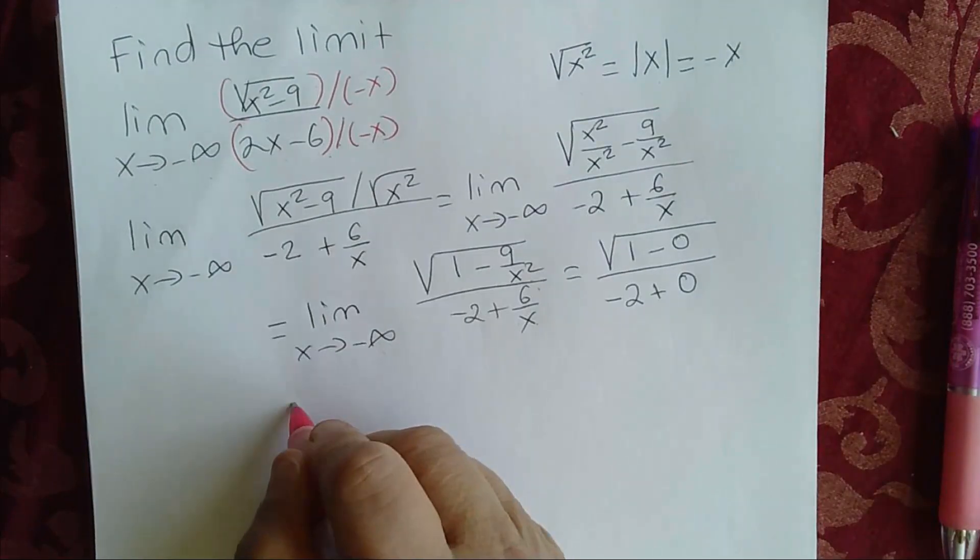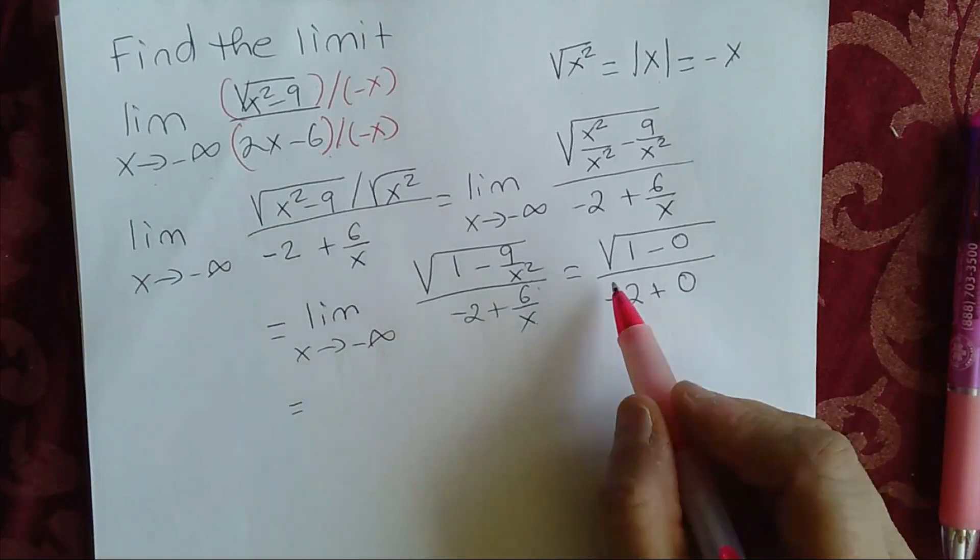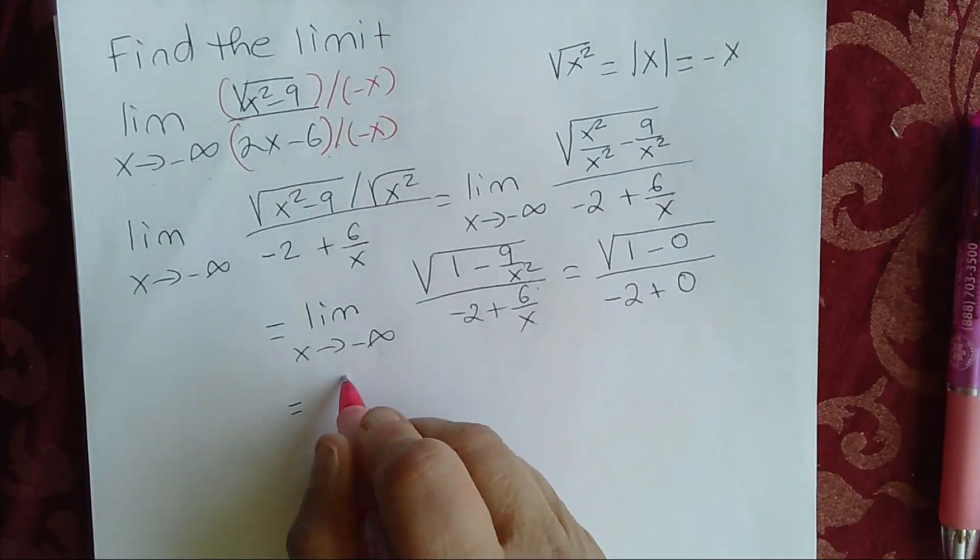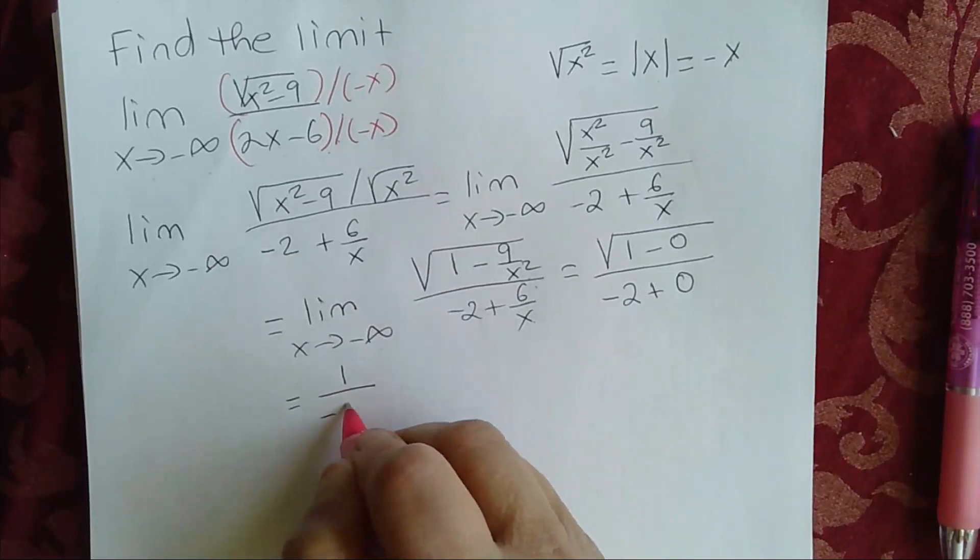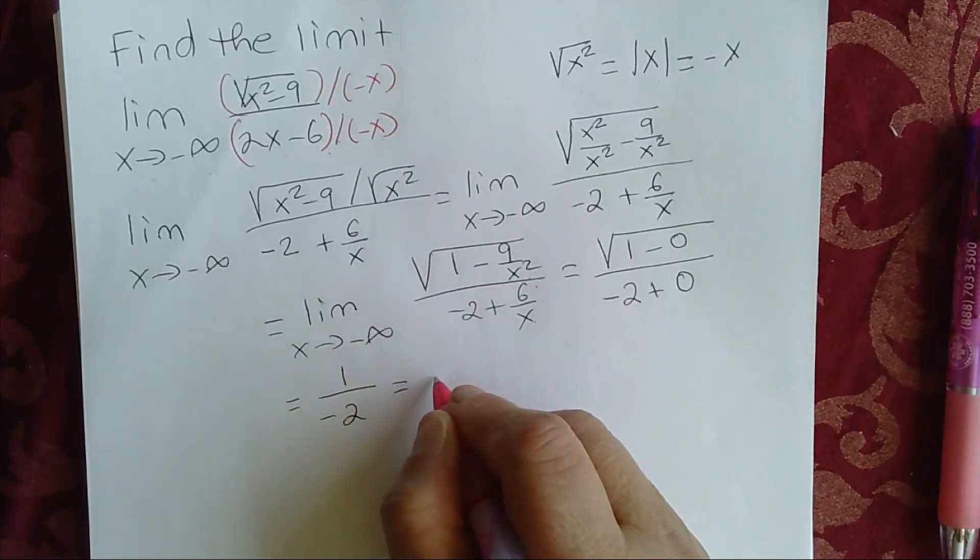Simplifying this, we get the limit of square root of 1, which is 1, divided by negative 2, or this is simply negative 1 half.